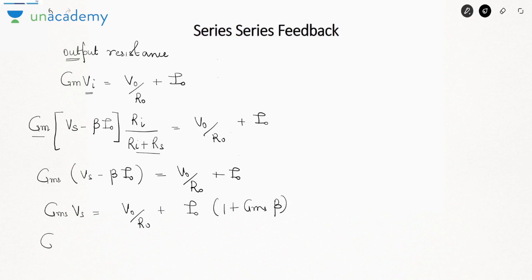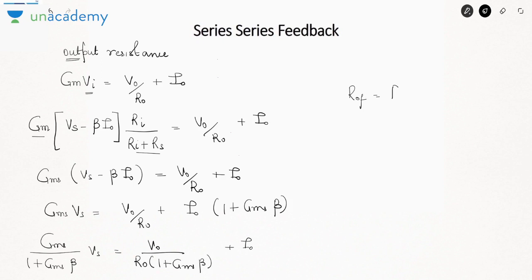Dividing by 1 + Gms·β, the output resistance with feedback is R0 · (1 + Gms·β). As predicted, the output resistance also increases due to series connection on the output side. Since we have series connection on both sides of the amplifier, both resistances increase.